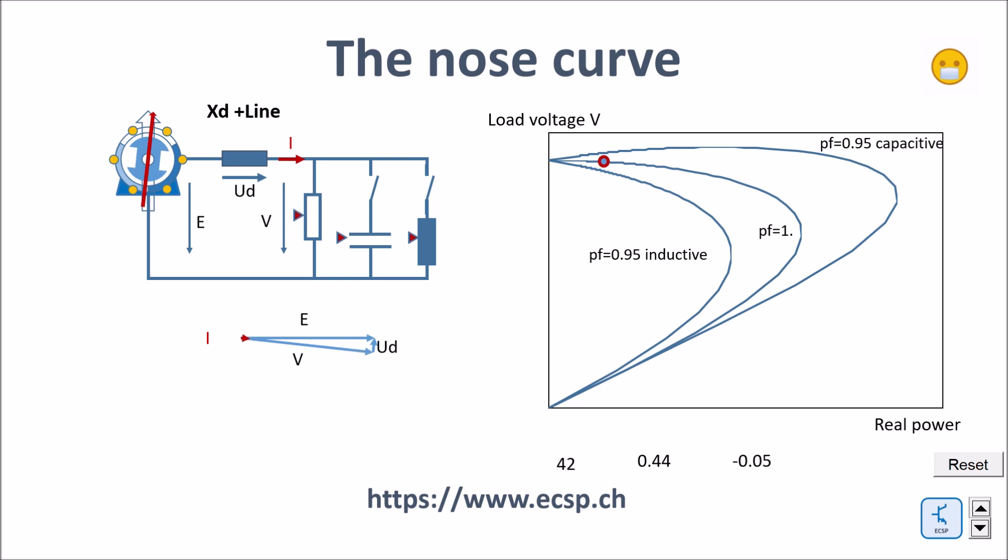Here we have now just the resistive load. You can see that the two switches to the capacitor and to the inductor are open. And finally, we have a capacitive load with a power factor 0.95 capacitive. And also here the same thing applies. As soon as I cross the point of no return, I lose the grip and the system would collapse.